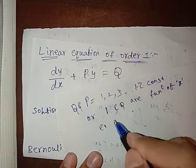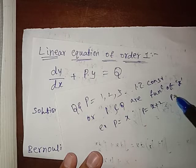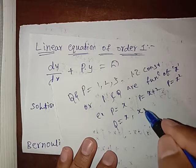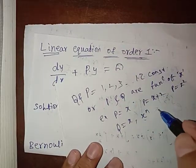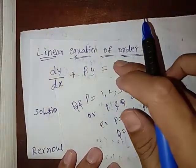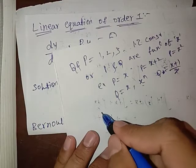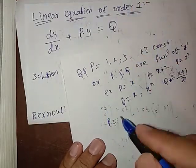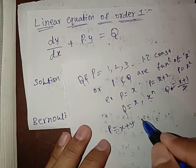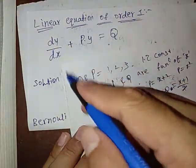For example, p may equal x, x+2, or x squared; q may equal x, x^n, or (x+1)/x. Any value is possible, but p and q must always be functions of x only. It is impossible to have p = x+y, because p is not a function of y or any other variable.